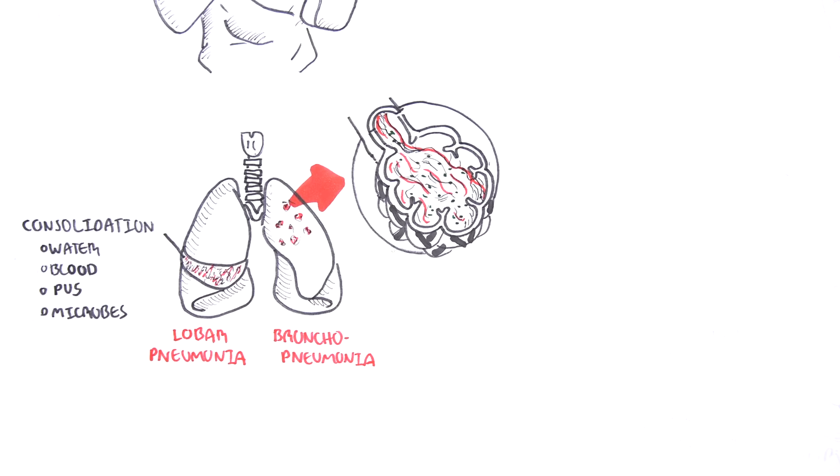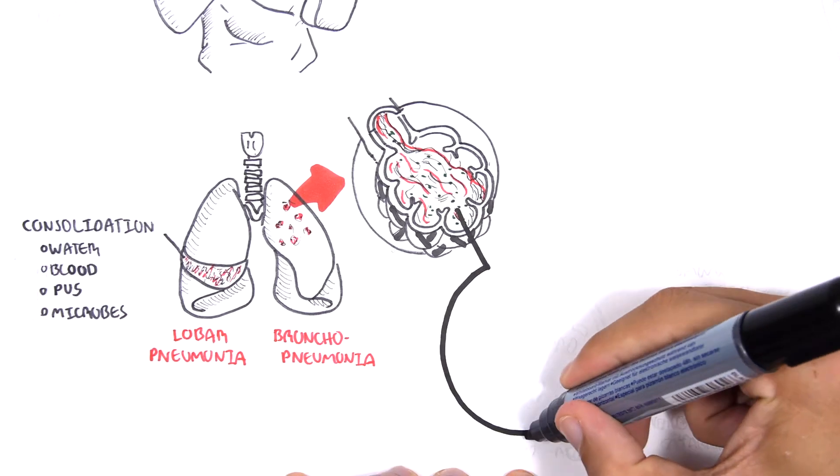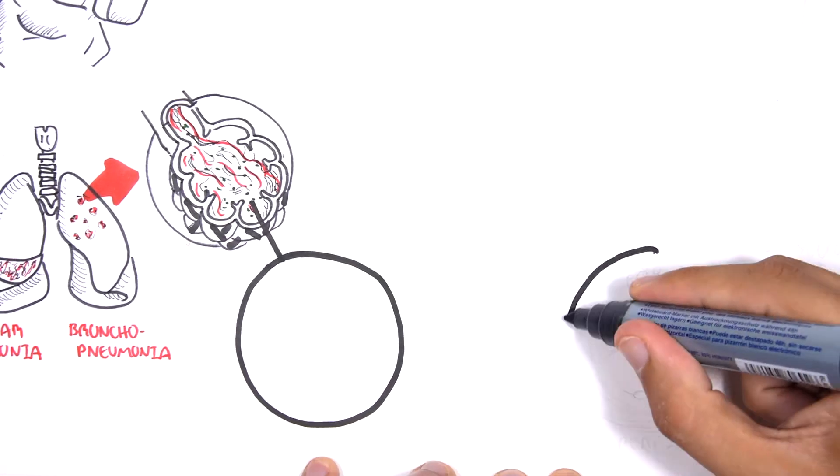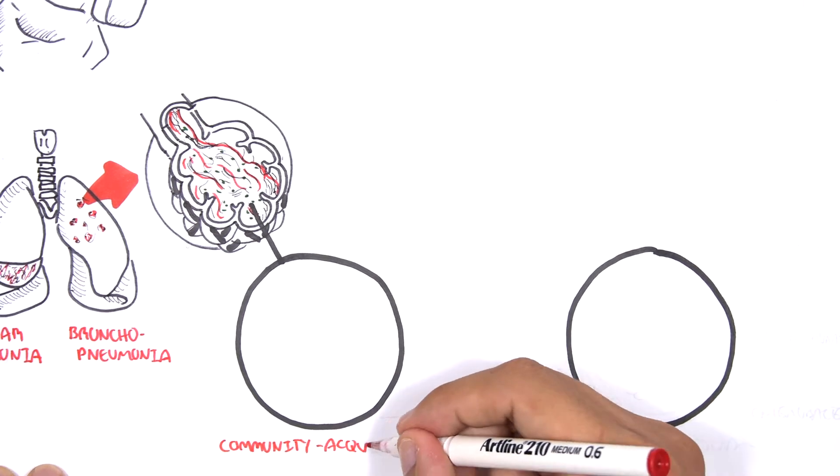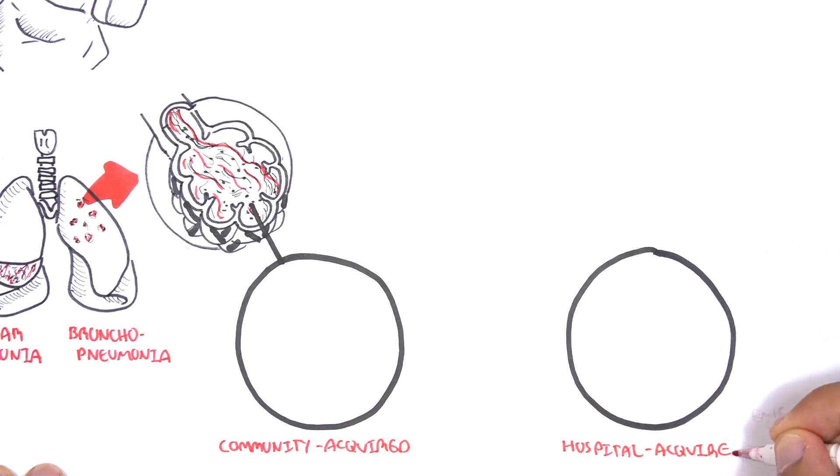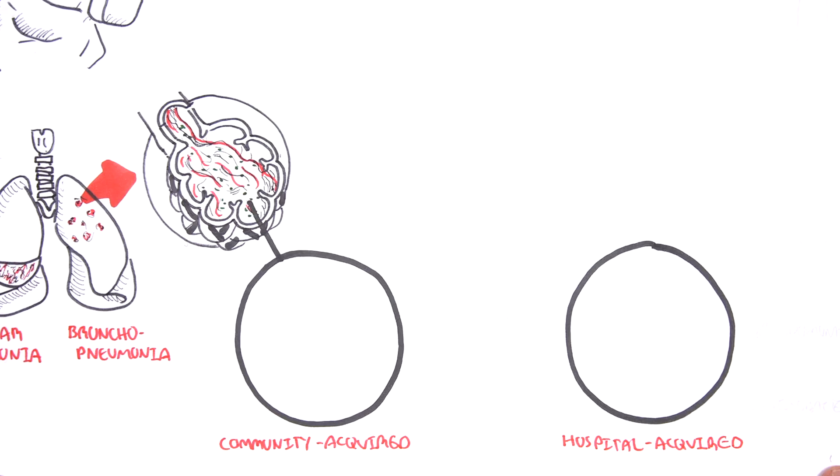Another way to categorize pneumonia is based on where the person has developed the signs and symptoms of pneumonia. An example is community acquired pneumonia and hospital acquired pneumonia or nosocomial pneumonia. Pneumonia is categorized this way because the causative agents of pneumonia differ in these two places.